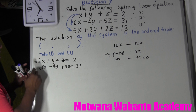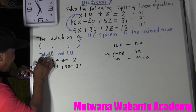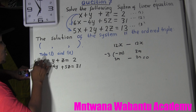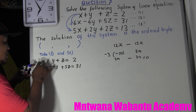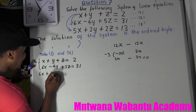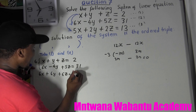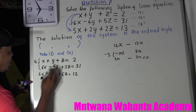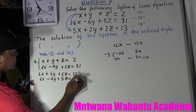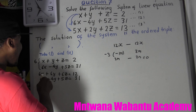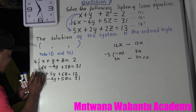Multiplying the first equation by 6 affects everything: 6x, plus 6y, plus 6z, equals 12. Then write the second equation as it is: 6x - 4y + 5z = 31. Now the x-coefficients are both 6, so we can eliminate x.